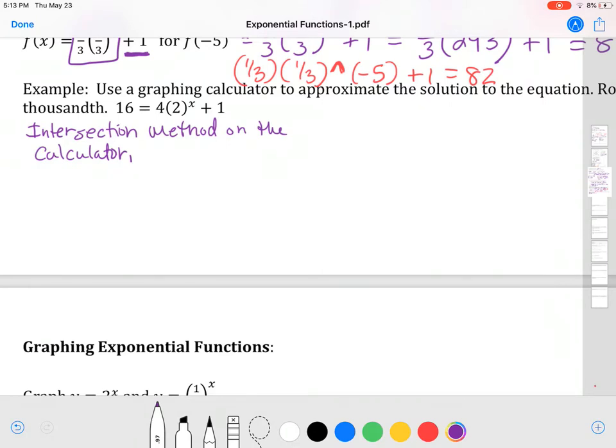So, if I have my equation, 16 is equal to four times two to the x plus one. When I solve that equation for x, what we're doing is we're looking for the value of x so this side of the equation is equal to this side of the equation. So, we're looking for a value of x that makes both of the sides of the equation 16.